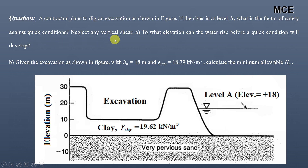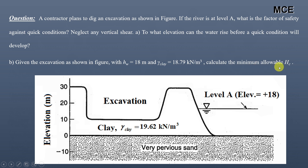By neglecting any vertical shear, we have to find at what elevation the water can rise before a quicksand condition will develop. For Part B, the excavation is the same as shown in the figure, with water depth equal to 18 meters at level A, and the unit weight of clay is 18.79 kN/m³. We have to calculate the minimum allowable height of clay for the quicksand condition not to develop. The contractor is removing a portion of clay.